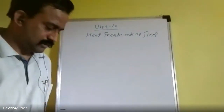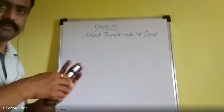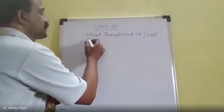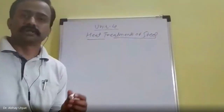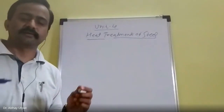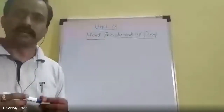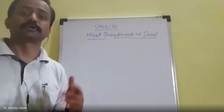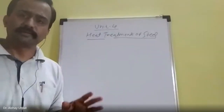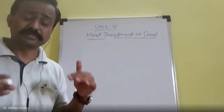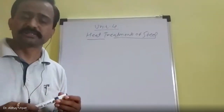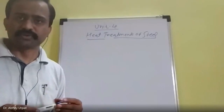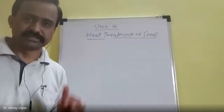So let us start with topic number four: heat treatments of steel. Now we have studied non-ferrous alloys. Ferrous alloys are iron-based and non-ferrous alloys are those whose base is other than iron. There are heat treatments for every alloy, but specifically the heat treatments of steels are important and which are covered in the syllabus. So whatever heat treatment processes we are going to study in this chapter are all for steels.